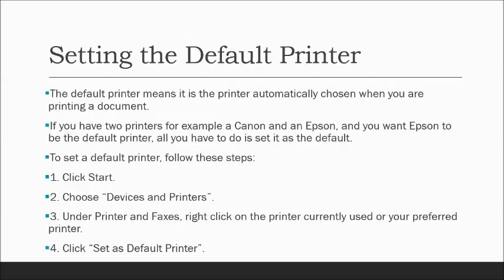The default printer is the one automatically chosen when printing a document. To set a default printer: click Start, choose Devices and Printers, right-click the printer you want to use, and click 'Set as Default Printer.' For example, if you have both Canon and Epson printers and the Canon is out of ink, you need to set the Epson as default before it will work.